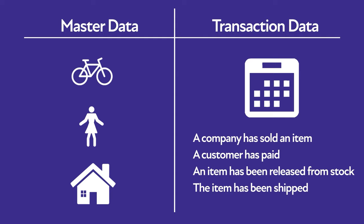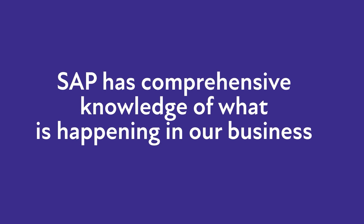For example: a company has sold an item — we have a sales order document. A customer has paid — we have an invoice or billing document. An item has been released from stock — we have a material movement document like goods issue or goods receipt. The item has been shipped — we have a shipment document. Therefore, the SAP system has comprehensive knowledge of what is happening in our business.